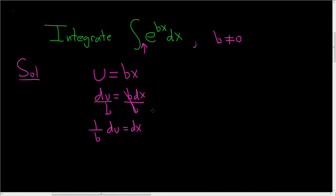And now we can rewrite our integral as follows. dx is equal to 1 over b du. Let's pull out the 1 over b, and then here we have e to the u du.